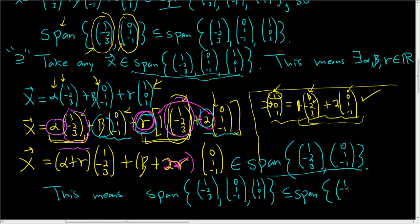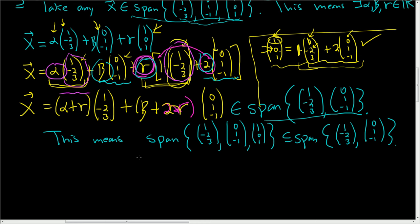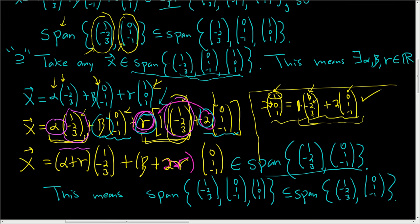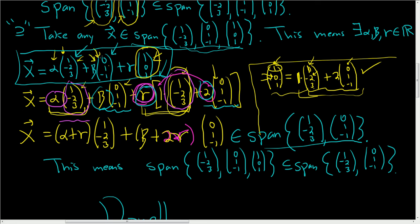It got a little messy, but hopefully it made sense. We showed both inclusions, so by the method of double inclusion, the spans are equal and the proof is done. The first direction was trivial. The second direction required more work — the key step was writing (1, 0, 1) as a linear combination of the other two vectors. Once you do that, the rest is just careful rearranging.